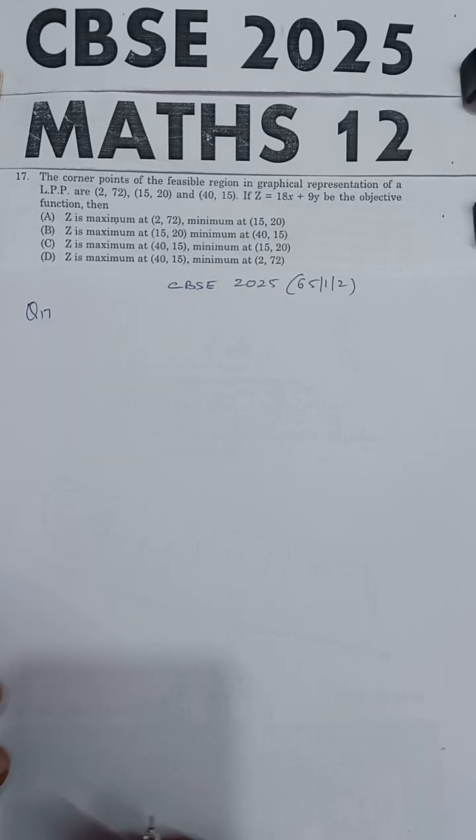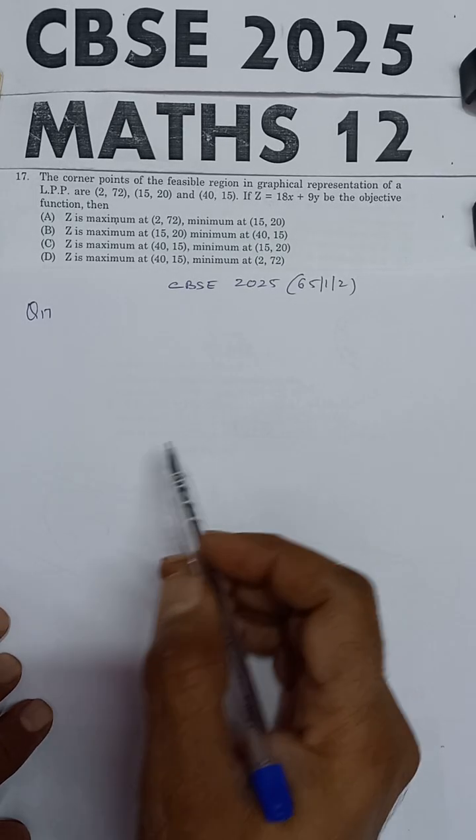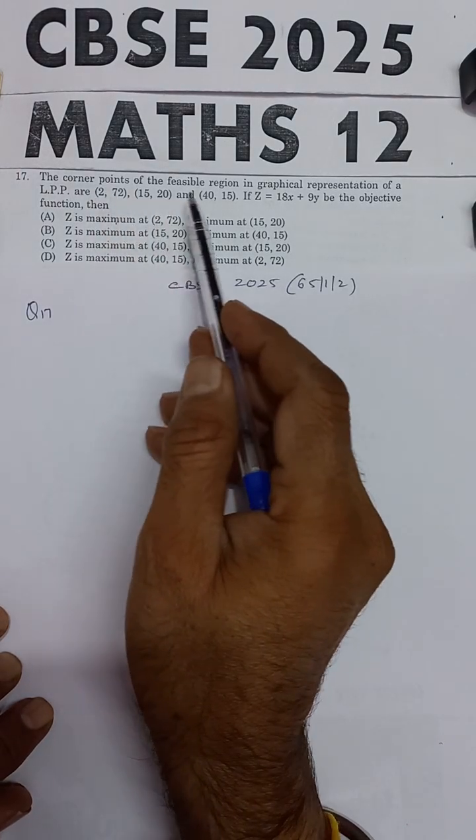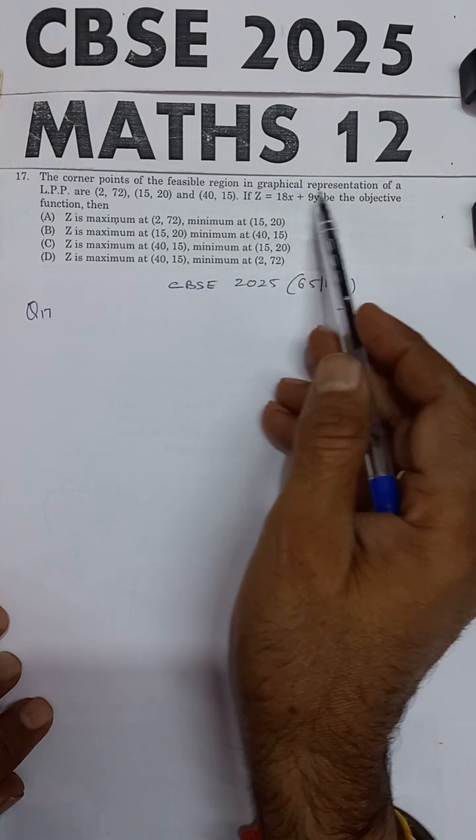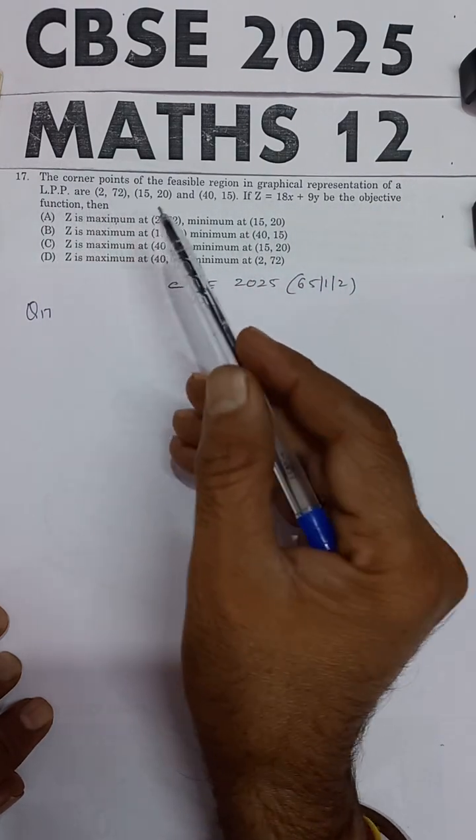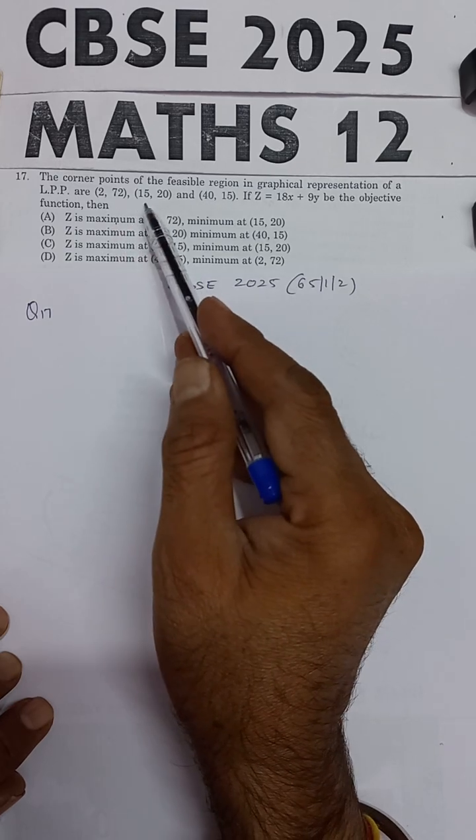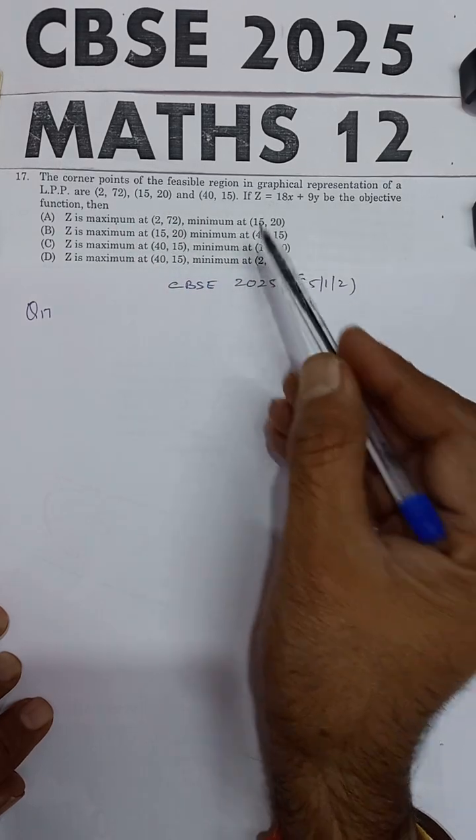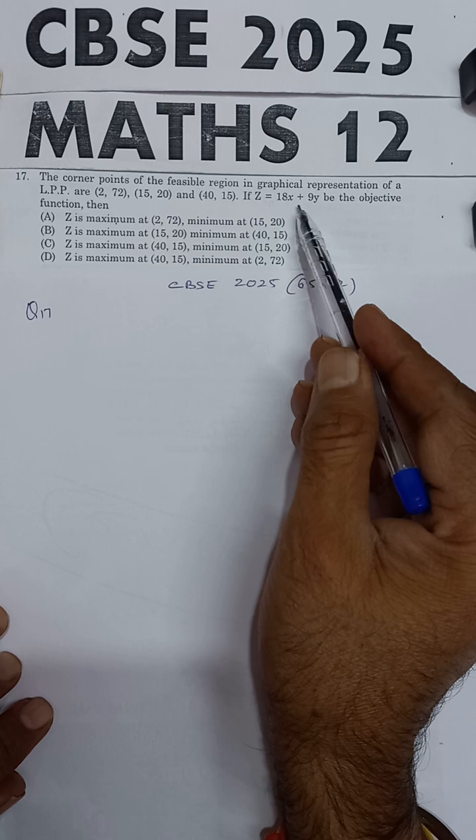This question is from CBSE 2025 Mathematics examination. The problem states that the corner points of the feasible region in graphical representation of a linear programming problem (LPP) are (2,72), (15,20), and (40,15).